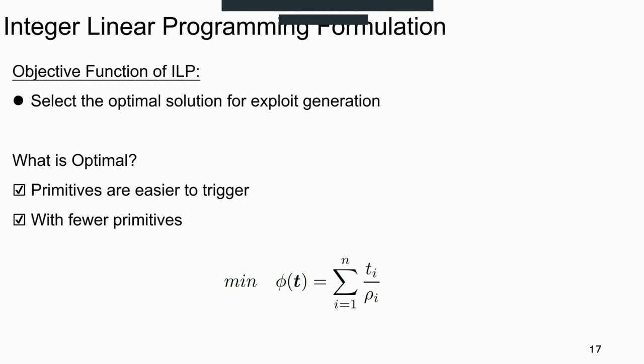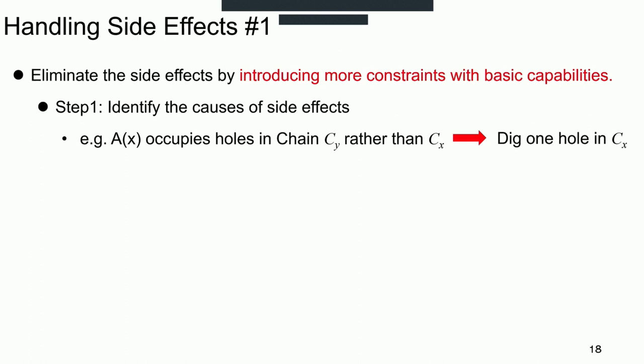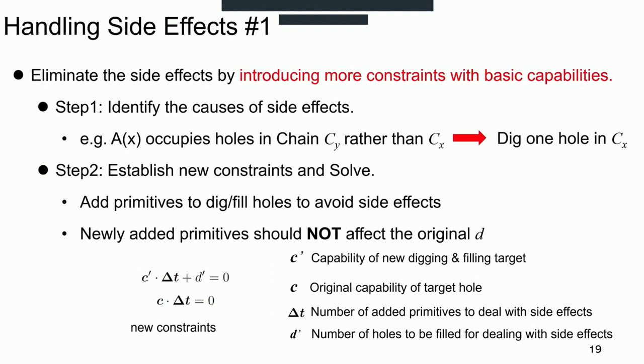Next, we illustrate two methods of dealing with side effects in manipulation, which is an important part of our work. The first method is eliminating the side effects by adding primitives. Specifically, we first analyze the causes of side effects based on the modeling of allocators. Then, we turn building side effects to a new digging or filling problem and establish new constraints, just as shown below.